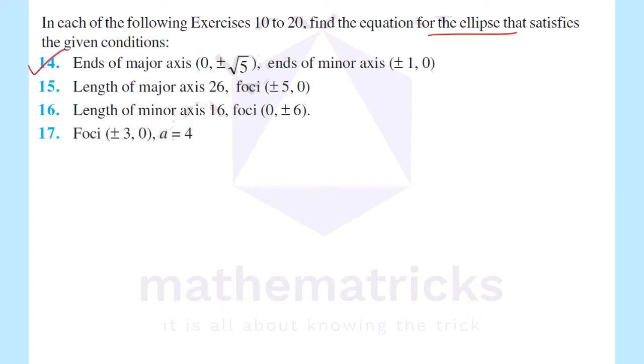14th question: ends of major axis at (0, ±√5), ends of minor axis at (±1, 0).